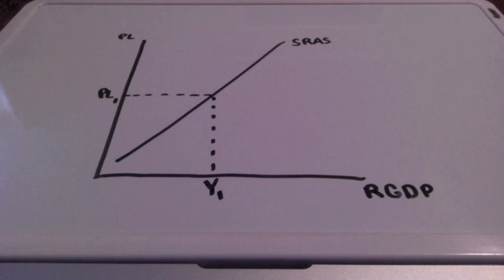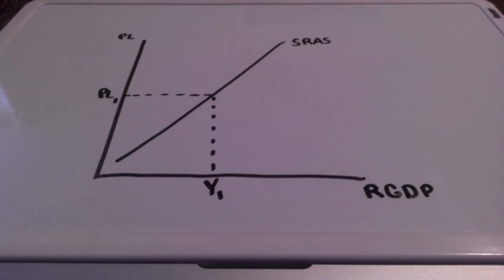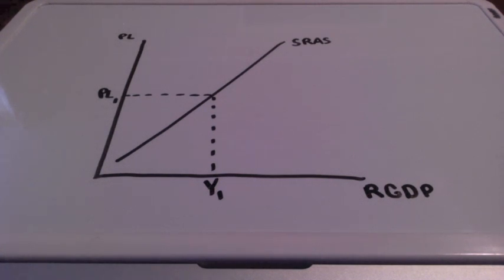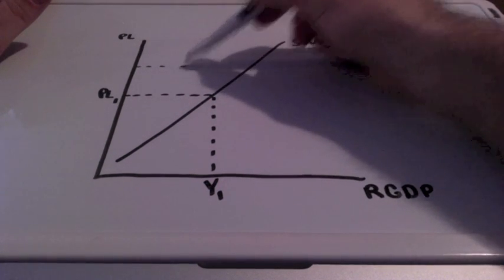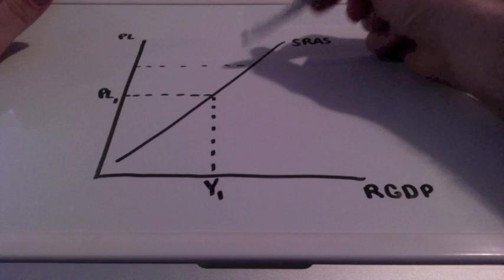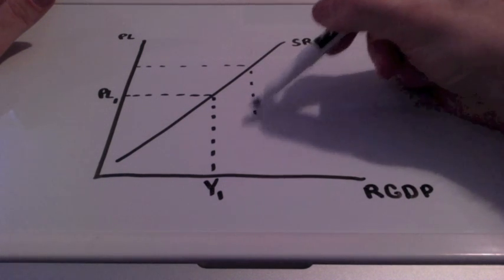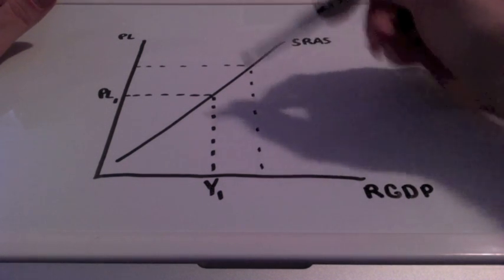There is also a long run aggregate supply curve, but we are going to focus on the short run aggregate supply curve in this video lesson. With the short run aggregate supply curve, we have a direct relationship between price levels and GDP. So if our price levels are going to increase, our GDP is also going to increase.